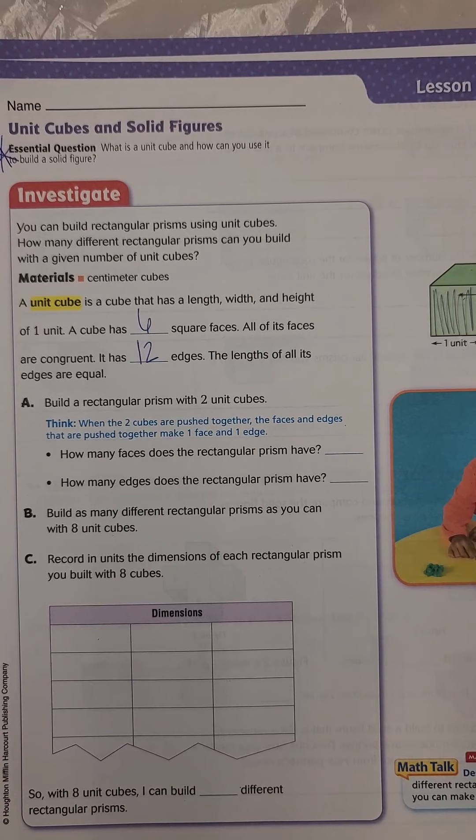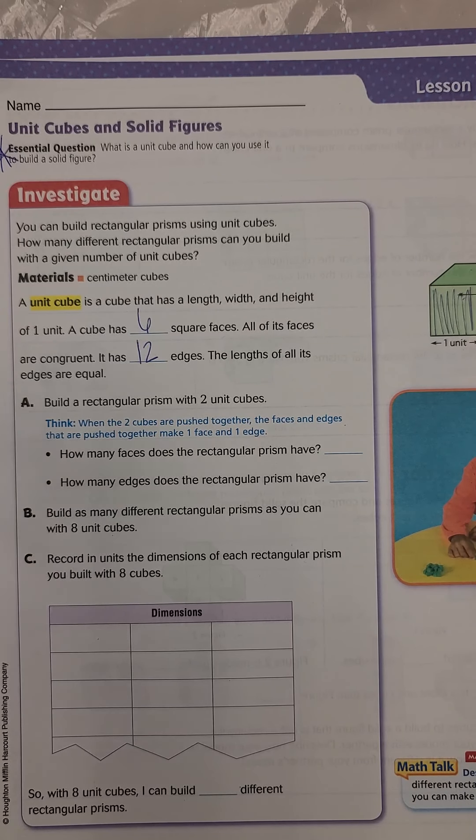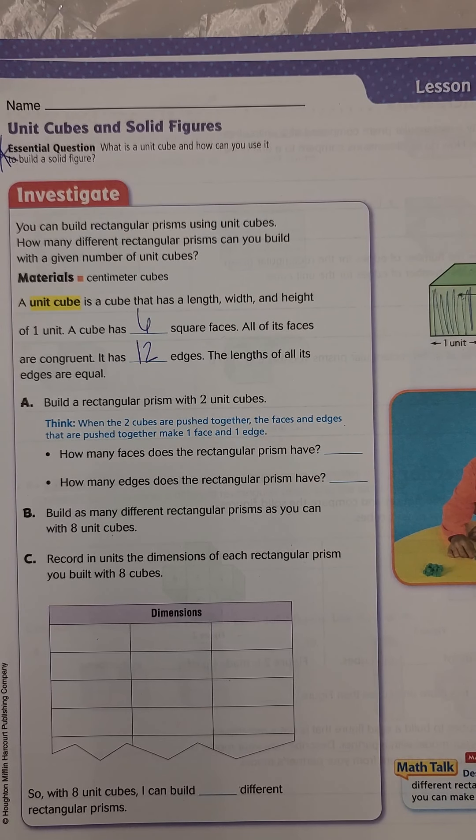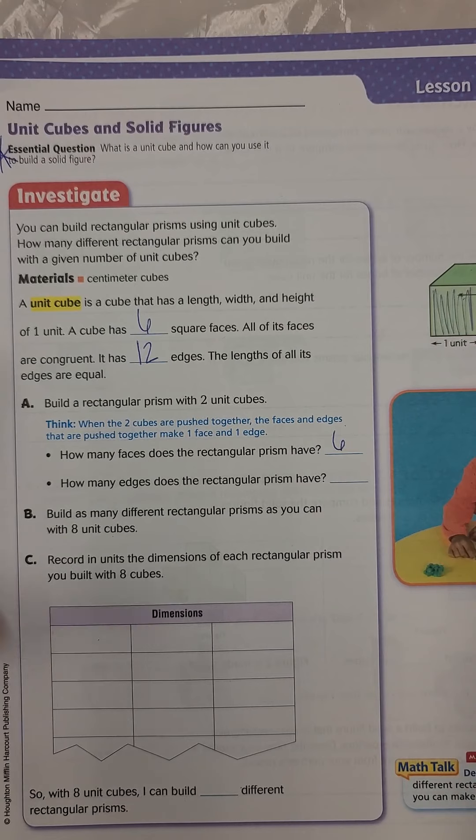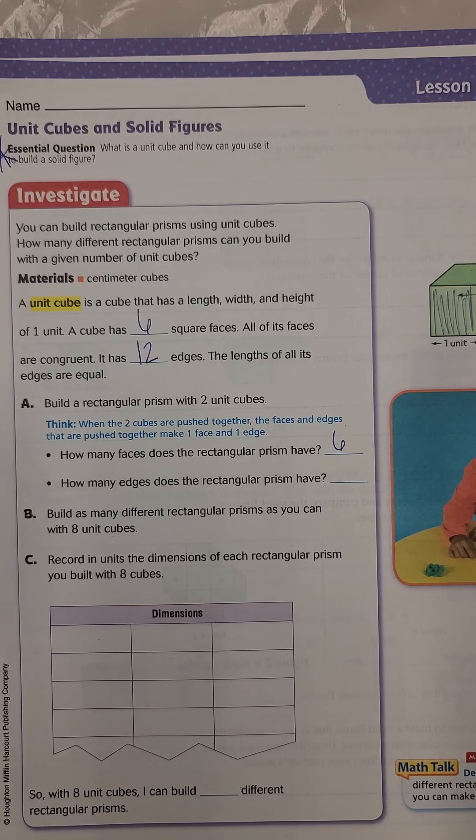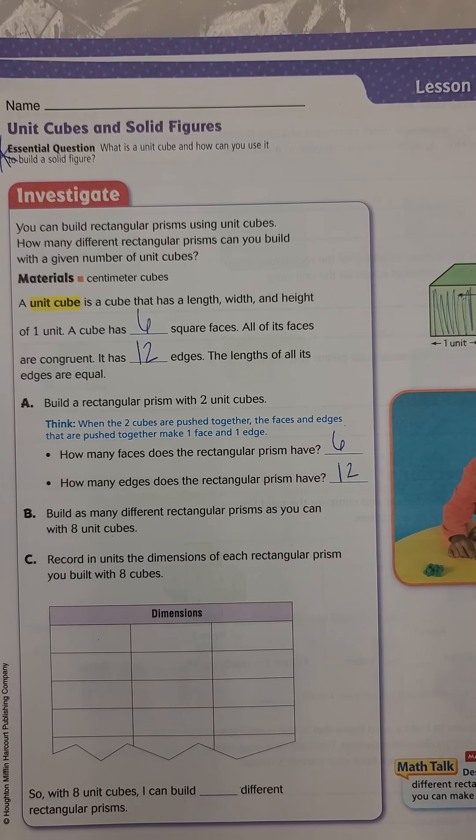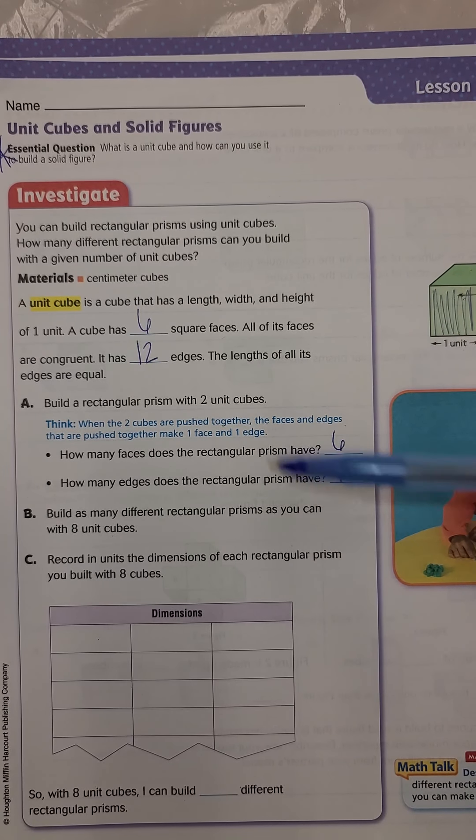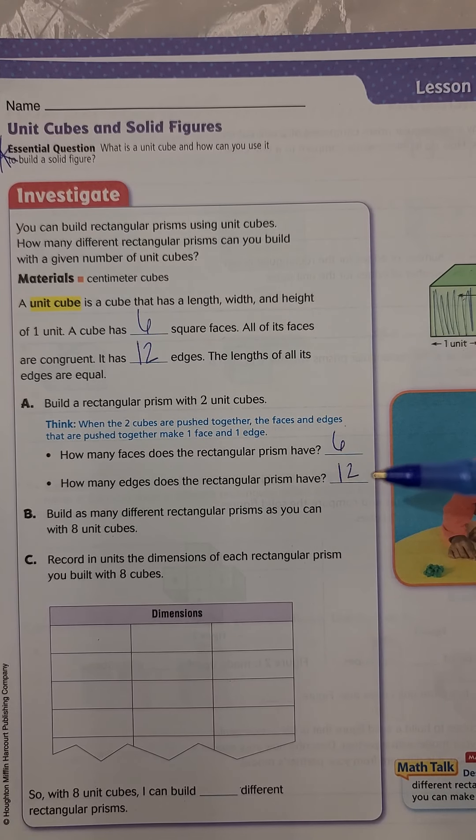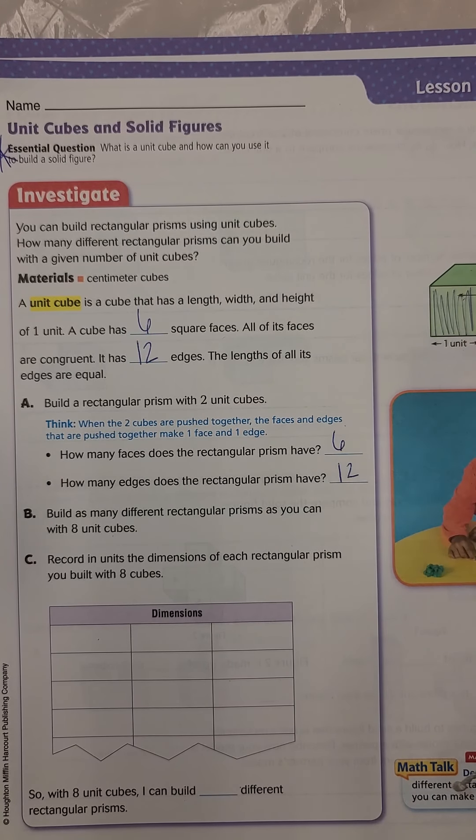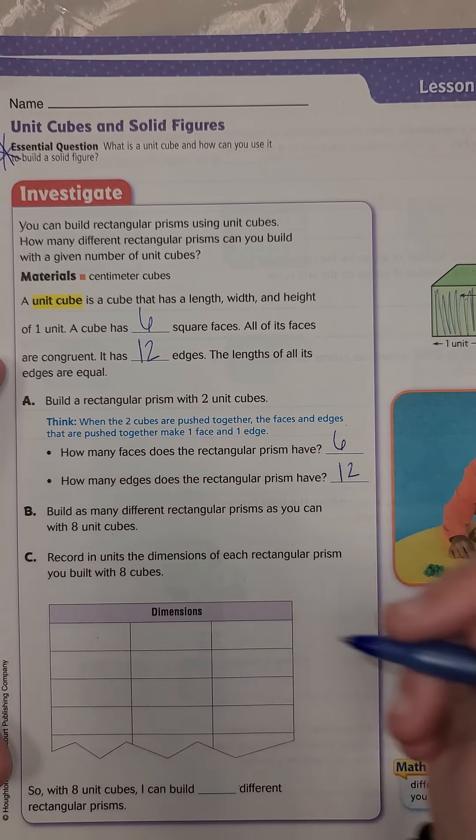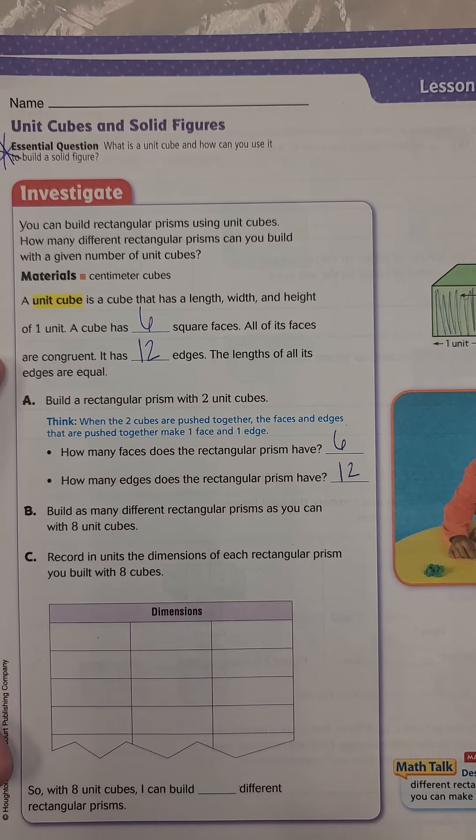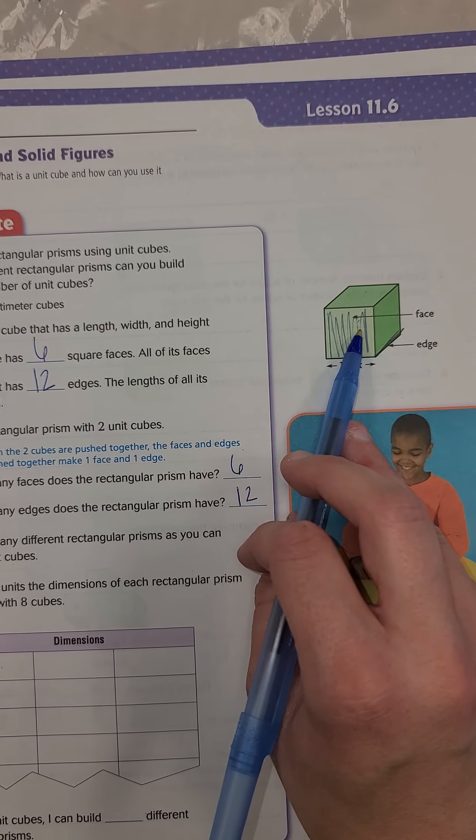All right, so what they wanted to do, obviously we can't do this because we don't have the materials, is to build a rectangular prism using two unit cubes. So how many faces does the rectangular prism have? And we already said it has six faces. How many edges does the rectangular prism have? It would still have 12 edges. You know what, we're gonna skip all this. We don't need that. As long as you get this up here, there's six faces, there's 12 edges. We're going to just move ahead.